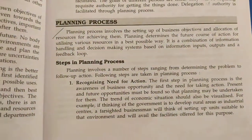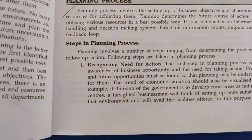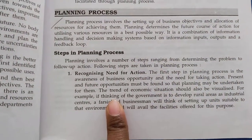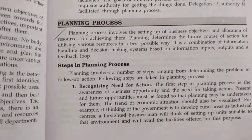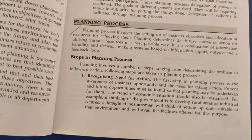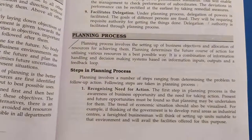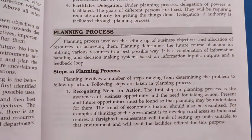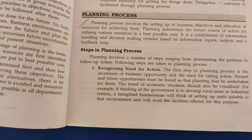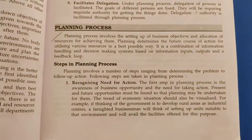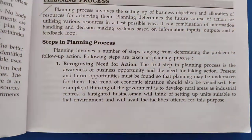For example, if the government is thinking to develop rural areas into industrial centers, a farsighted businessman will think of setting up units suitable to that environment and will avail the facilities offered for this purpose. They will think whether that area is suitable for their business, and if it is suitable, they will automatically establish their industry over there. That is the first step.